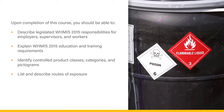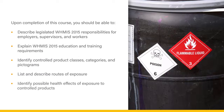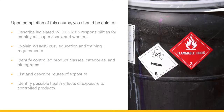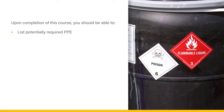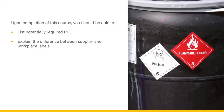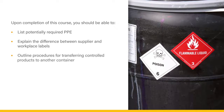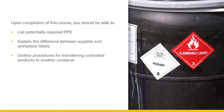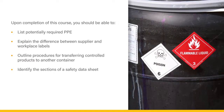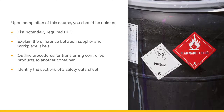List and describe routes of exposure. Identify possible health effects of exposure to controlled products. List potentially required PPE. Explain the difference between supplier and workplace labels. Outline procedures for transferring controlled products to another container. And identify the sections of a safety data sheet.